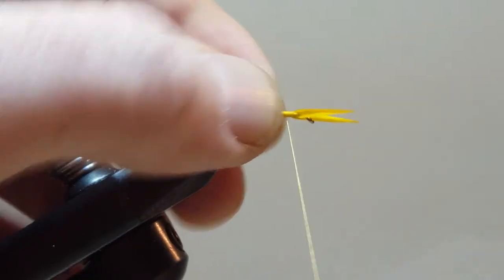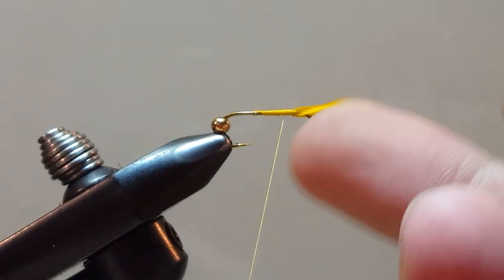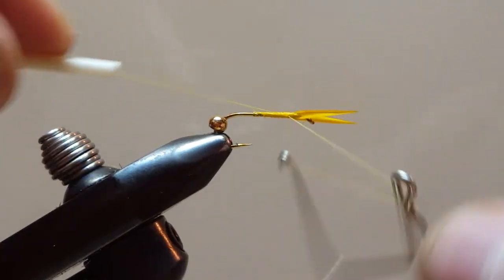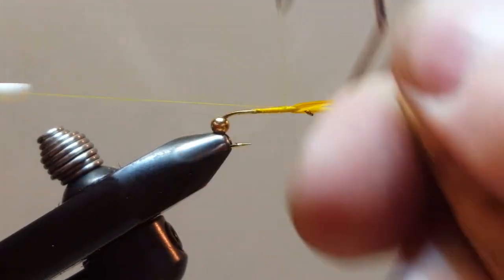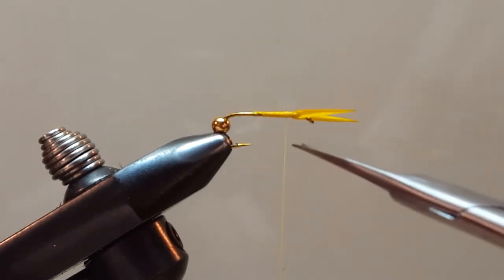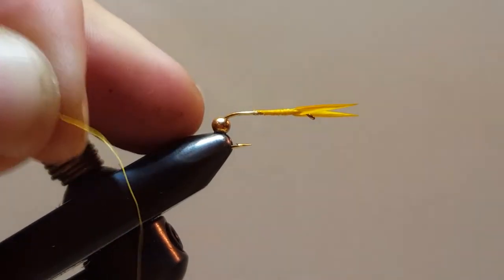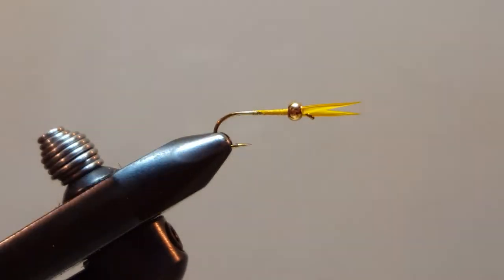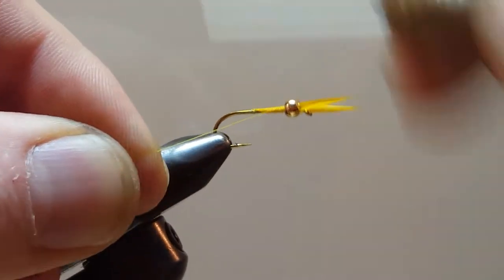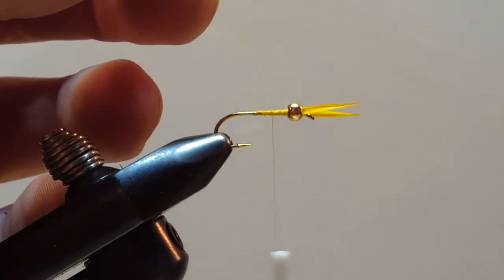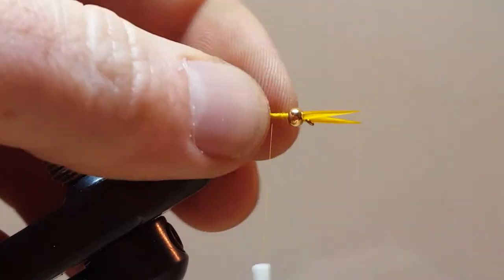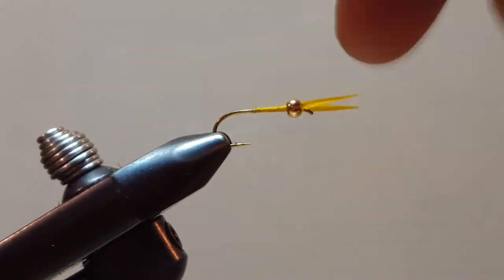All right, now at this time I'm going to come in with my whip finish tool. Give it the one, two, three whip finish. And I'm going to trim off my thread, slide my bead forward, and cast my thread on again. This way I don't have a piece of thread hanging out over the bead eye.